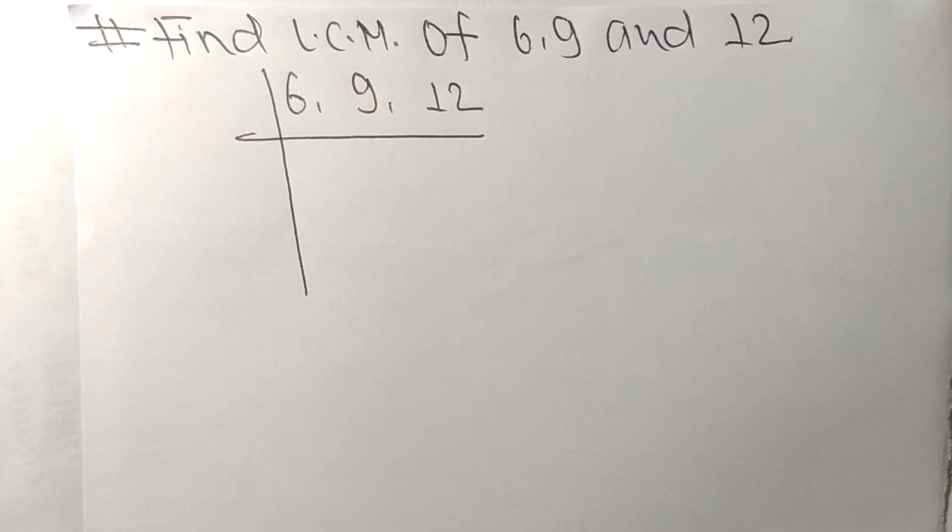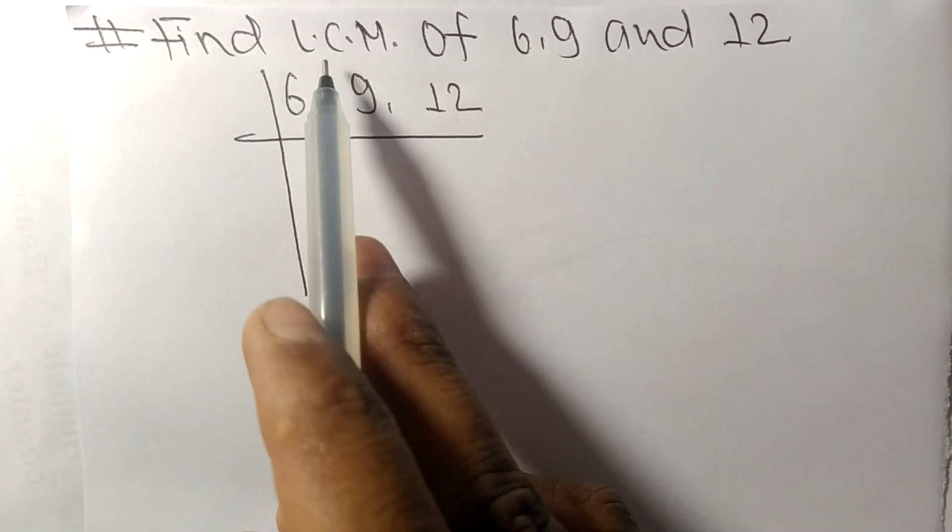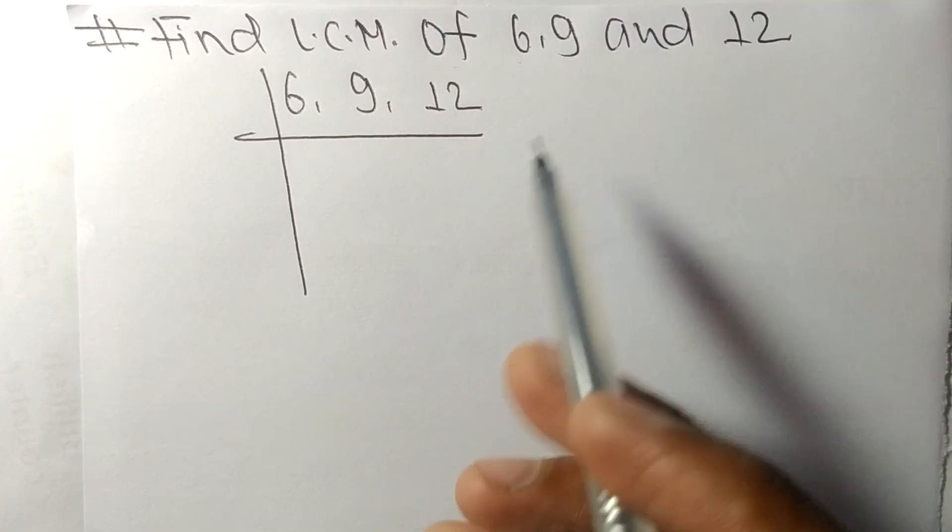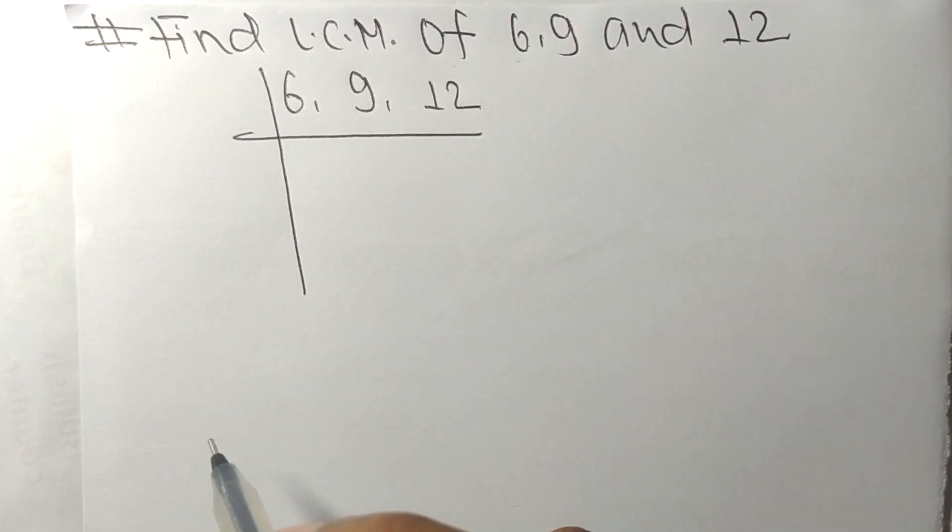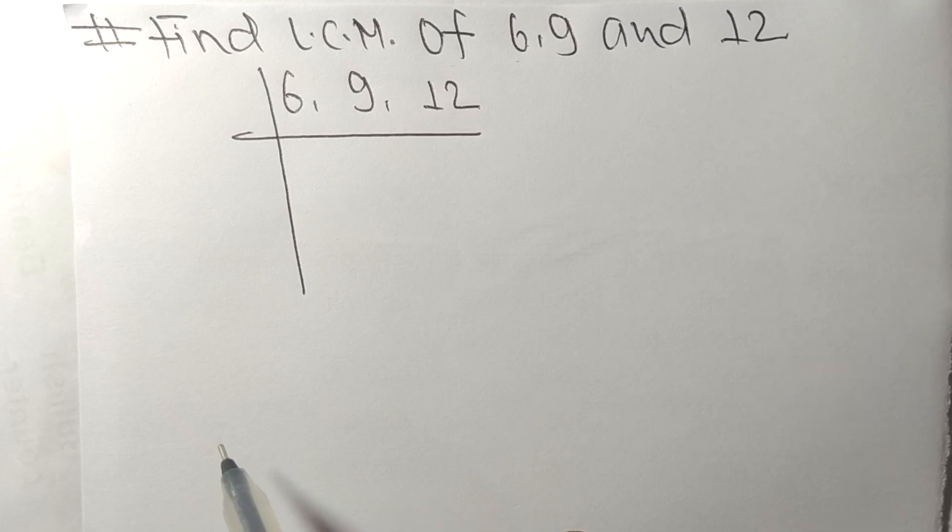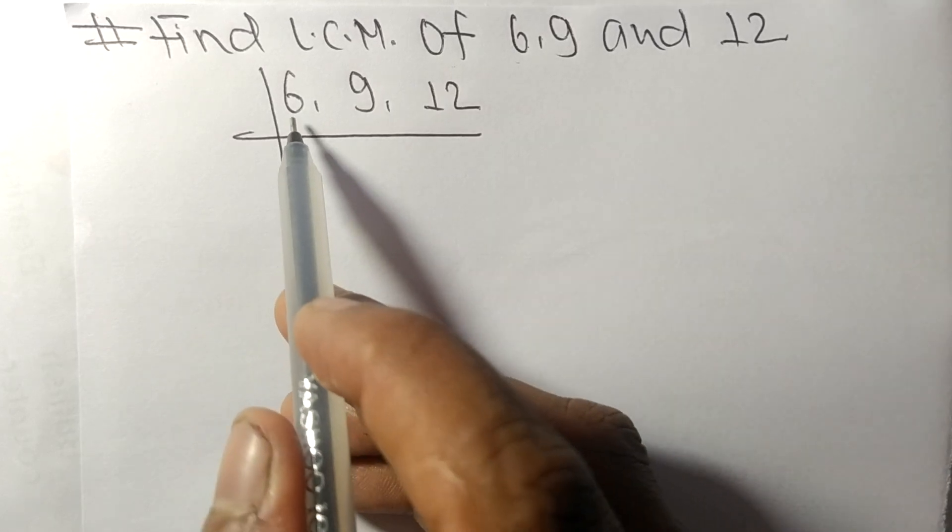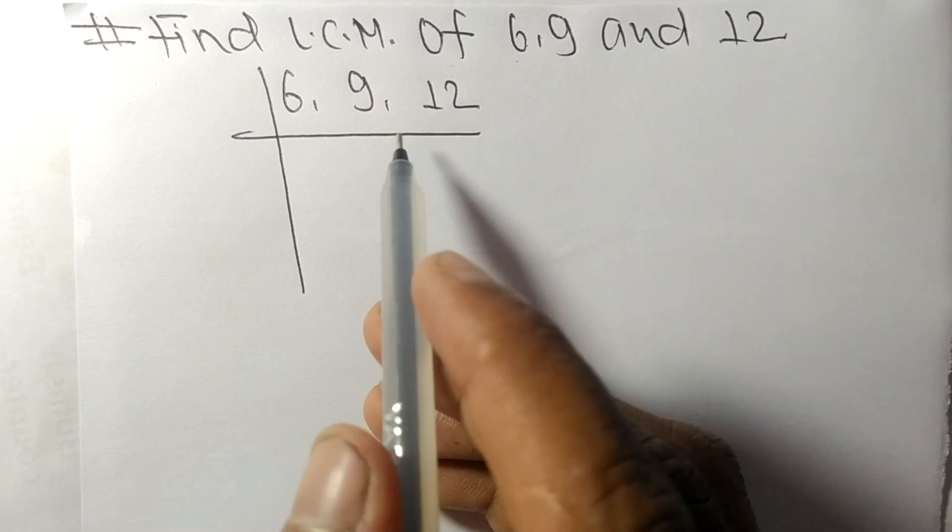So today in this video, we shall learn to find the LCM of 6, 9 and 12. To find LCM, we have to choose the lowest number that can exactly divide any two of these numbers.